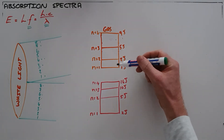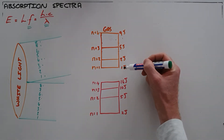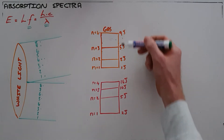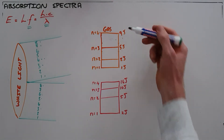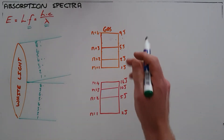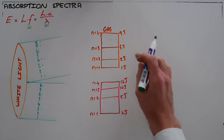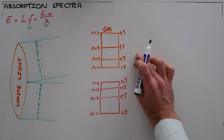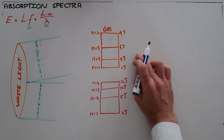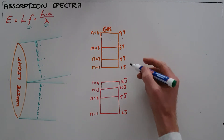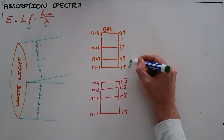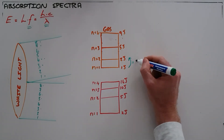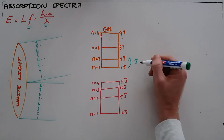The first gas has its first energy level with an energy of 1 joule. Photons with the correct amount of energy will be absorbed. A transition from the first to the second energy level would require 1 joule of energy.